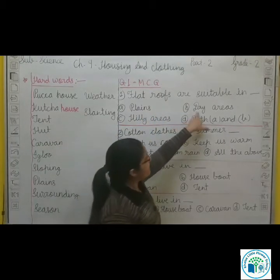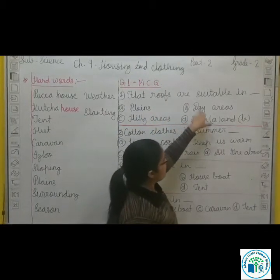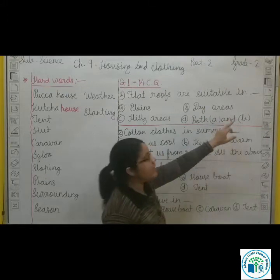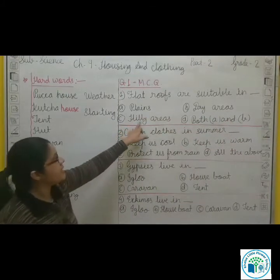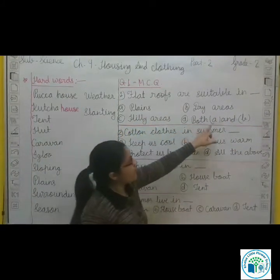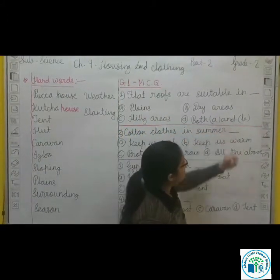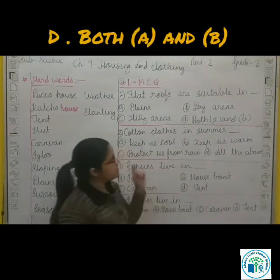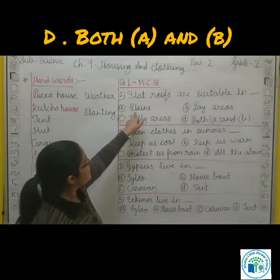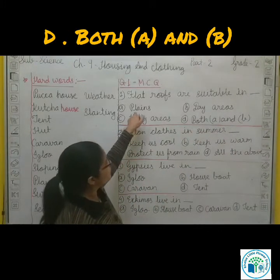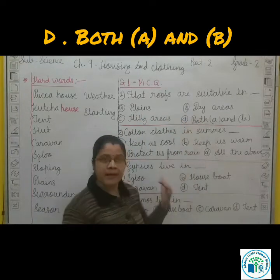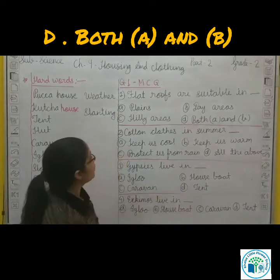Option B: Dry areas. The answer is Plains. Flat roofs are suitable for plains. For dry areas, flat roofs are also used.